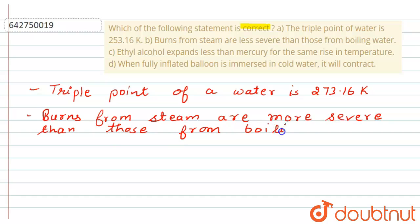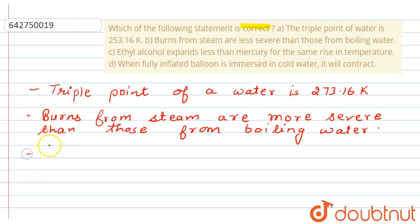The next statement is that ethyl alcohol expands less than mercury for the same rise in temperature. This is not correct because ethyl alcohol actually expands more than mercury for the same rise in temperature.